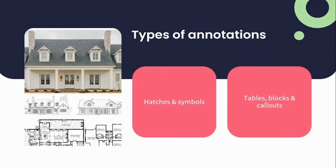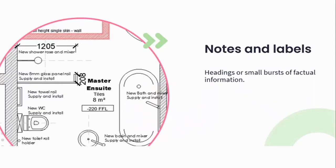For the purposes of our lesson, we are going to break down notes and labels first. Notes and labels are your text description — they come in the format of text and description, like paragraphs or short sentences used to describe the element or section of the drawing. It could refer to a heading or have small bursts of factual information. For example, you might want to tell the contractor that the material of the table is timber, and more specifically the actual timber you're wanting to use — maybe oak or pine.